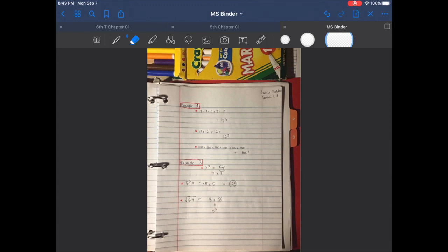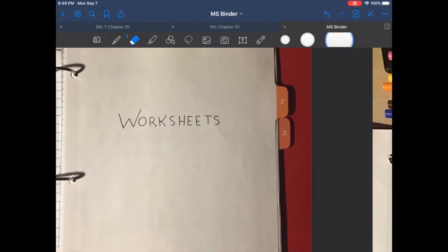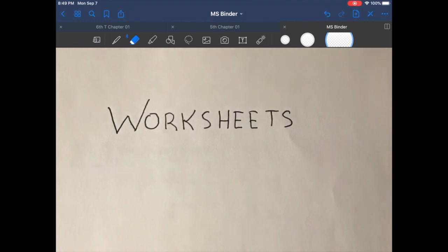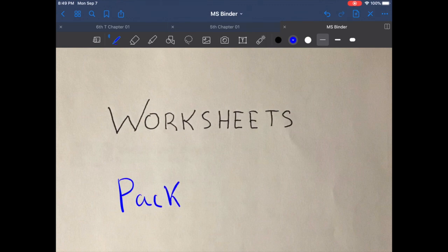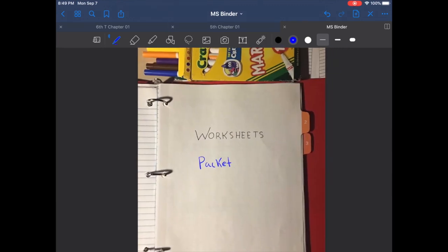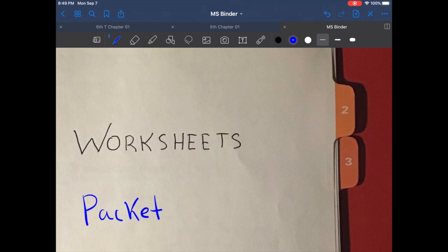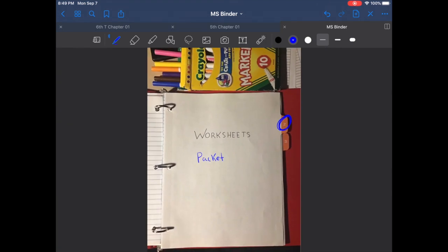Now your second section is the worksheets. You receive this in a packet. Those of you that are remote, you receive this in the packet that was given to you. Please remember that you have three sections. We are now on section two. This is where the worksheets come into place. So please have them inside a three ring binder.